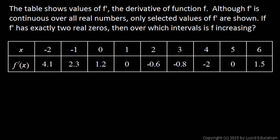Although f prime is continuous over all real numbers, only selected values of f prime are shown. And that's these values on the bottom row. If f prime has exactly two real zeros, then over which intervals is f increasing?